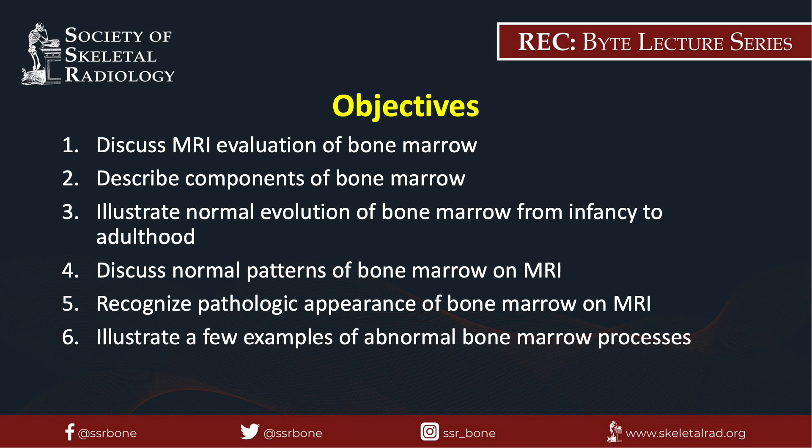For today's brief talk, we will be first discussing the MRI evaluation of bone marrow, describing the components of bone marrow, illustrating the normal evolution of bone marrow from infancy to adulthood, discussing the normal patterns of bone marrow on MRI, recognizing the pathologic appearance of bone marrow on MRI, and illustrating a few examples of abnormal bone marrow processes.